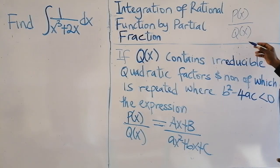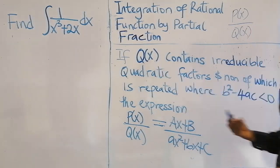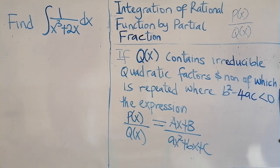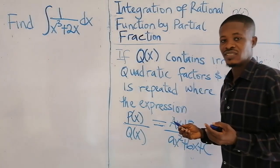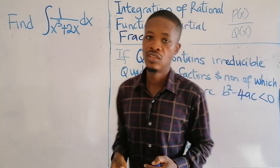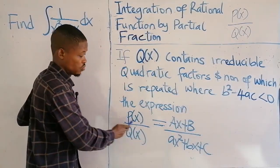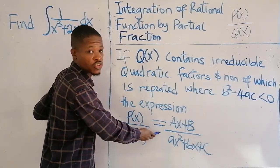So in this case now, we are having the denominator, which is Q of X, contains even this single quadratic factor. And whereby this quadratic factor, we cannot factorize it, it is unfactorizable. So in that case now,